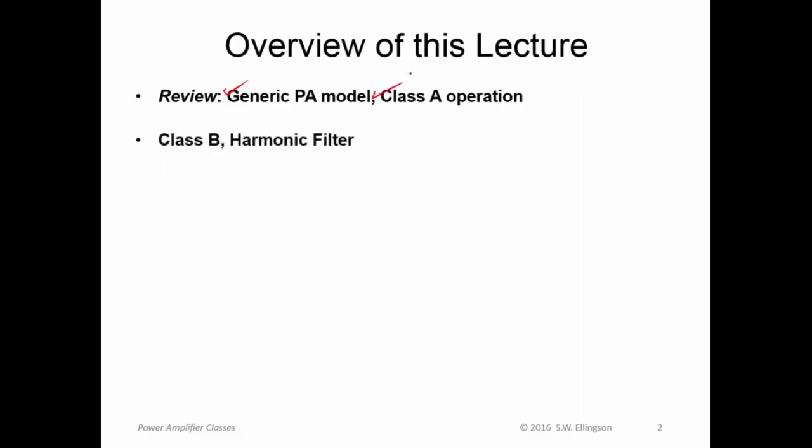Then we'll move on to Class B, and we'll say a little bit more about this thing called the harmonic filter, which appeared in the generic power amplifier model. I'll talk about Class AB. We'll talk about the concept of conduction angle, which turns out to be another way to characterize differences between power amplifiers.